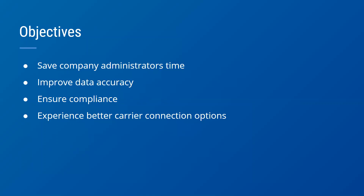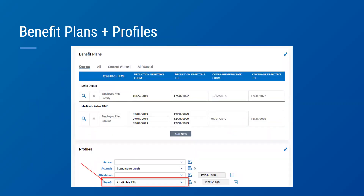To understand the benefit enrollment process, we must first understand two key components: benefit plans and benefit profiles. Benefit plans contain all of the information for the employee to electronically elect their benefits, including a summary of benefits and plan comparisons. Once benefit plan elections are approved, the benefit deductions will automatically populate to payroll based on the benefit plan premium configurations. Once completed, an employee's benefit plan elections can be found in their employee information profile in the BeyondPay system.